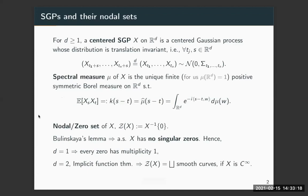Let me start with a few definitions. Throughout this talk, I'll be interested in studying centered stationary Gaussian processes. It is a Gaussian process which is invariant under translations. To every such stationary Gaussian process, we can associate something called a spectral measure — it is the unique finite symmetric Borel measure on R^d, which is related to the process via its covariance kernel. The covariance kernel of the process is just the Fourier transform of the measure mu.